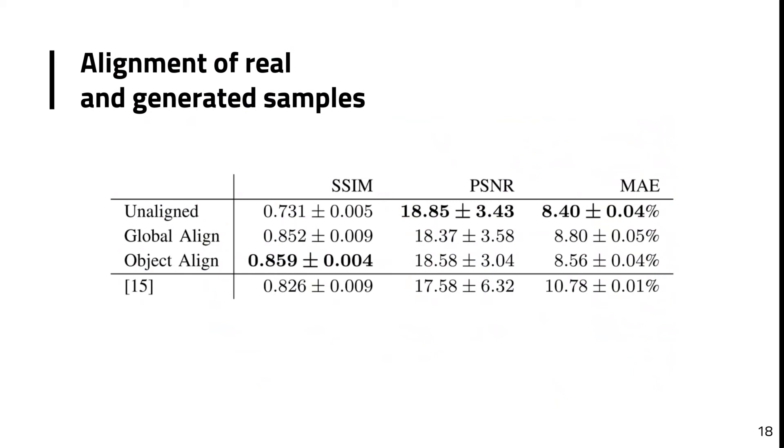As shown in the table, with the object alignment approach, a minimal improvement is obtained for both the structural overall similarity, 0.859, and the mean absolute error, 8.56%, when compared to the global alignment approach. But the mean absolute error is still higher than that of the unaligned case, 8.40%. A possible reason for this is that the transformation aligns well with the salient features in the image, achieving a better structural similarity, but introduces more distortions to the images at the same time, increasing the absolute errors.